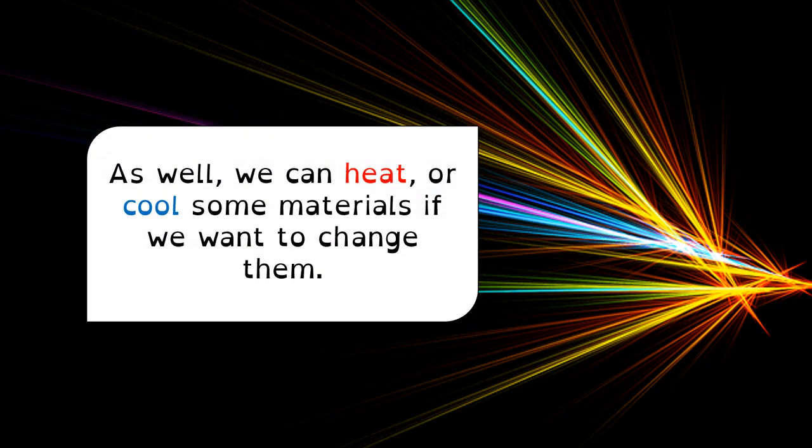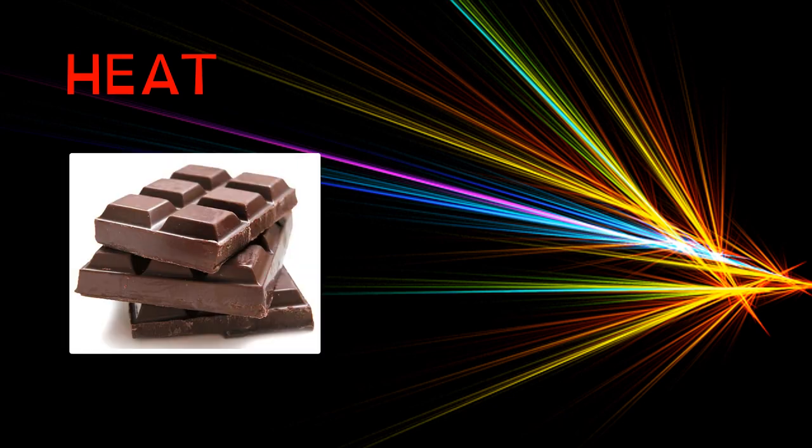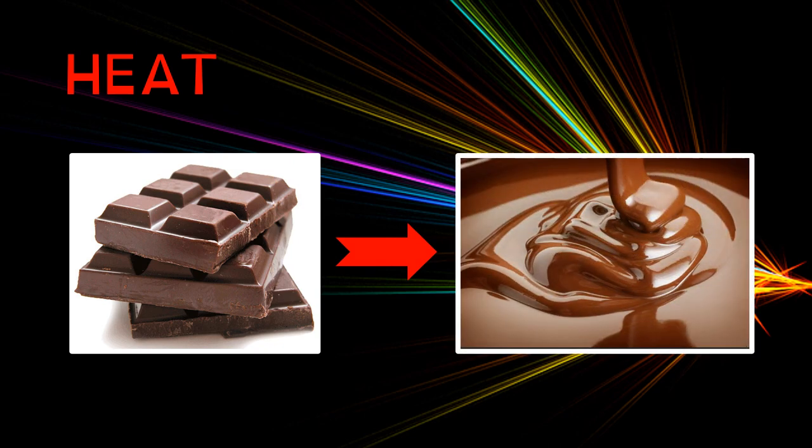Two more things that we can do to some materials are heat them or cool them. We can heat them or cool them to change their shape. Let's see an example for heat. Here we have some solid chocolate. And if we heat it, we will have it in this liquid shape.